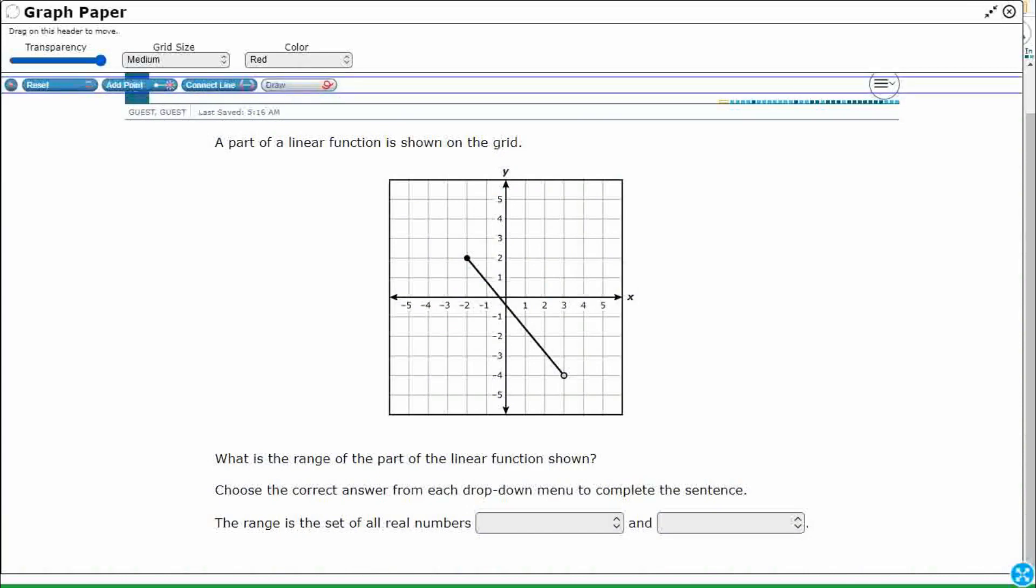We need to find the range. These two things are always brought together: Domain and Range. Let's define these two so we don't trick ourselves, because some of the incorrect answer choices are going to be the domain, not the range. The domain is the set of all independent variable values.